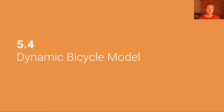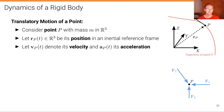We're now ready to define the dynamic bicycle model. In this lecture we are only going to look at the most basic form of this dynamic bicycle model that considers lateral wheel slip. Before we start, let's first look at the dynamics of a point and then of a rigid body.